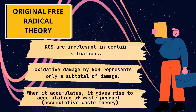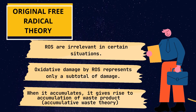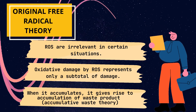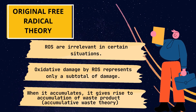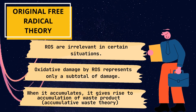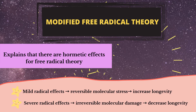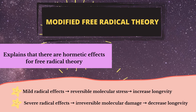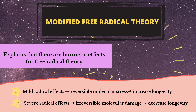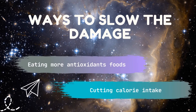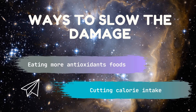Originally, this theory described that reactive oxygen species are irrelevant in certain situations such as anaerobic growth, and the oxidative damage caused by them represents only a subtotal of damage. However, when it accumulates, it gives rise to accumulation of waste products. Nowadays, this theory has evolved and gave rise to more complex theories like the modified free radical theory. One of them is redox stress theory, which explains hormetic effects: mild radical effects trigger reversible molecular stress, increasing longevity, while severe radical effects trigger irreversible molecular damage, decreasing longevity. Ways to slow the damage include eating more foods containing antioxidants and cutting calorie intake to reduce redox signaling.